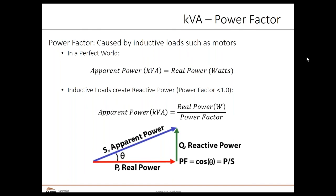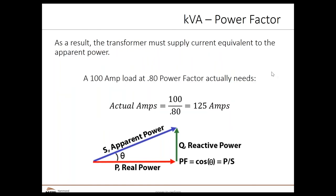Let's look at an example of how it's calculated. A 100-amp load at 0.80 power factor actually needs 125 amps based on the calculation. The transformer in this case has to be sized for 125 amps, not 100 amps.